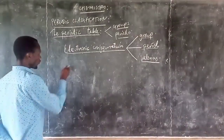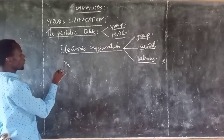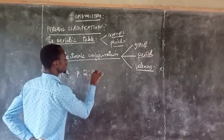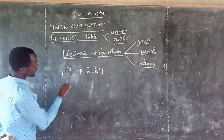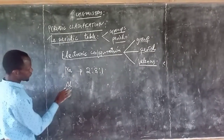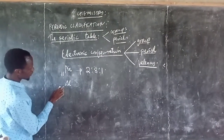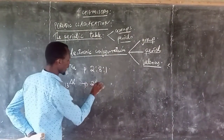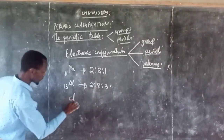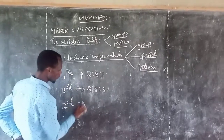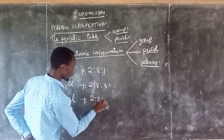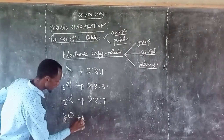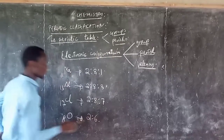Let us take an example of sodium. Sodium has 11 electrons. The electronic configuration of sodium is 2, 8, 1. For aluminium, that is 13, this is 2, 8, 3. For chlorine, that is 17, the electronic configuration is 2, 8, 7. For oxygen, that is 8, the configuration is 2, 6.